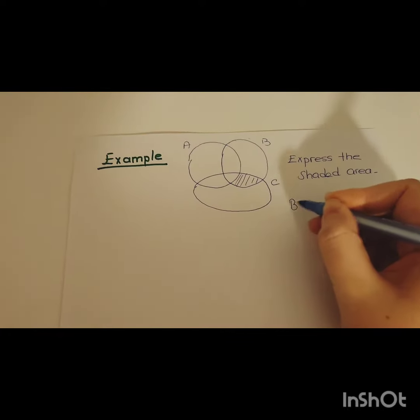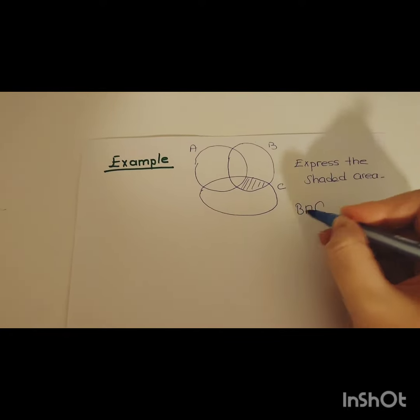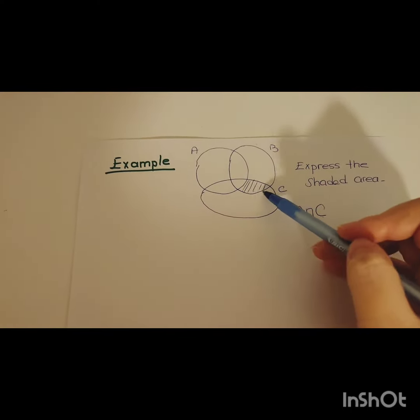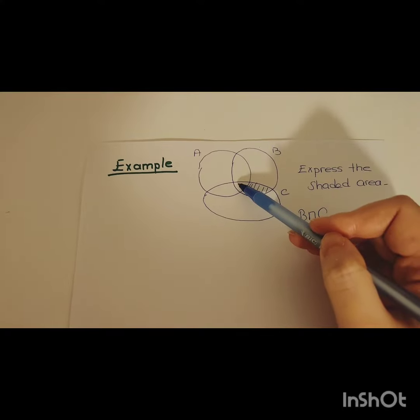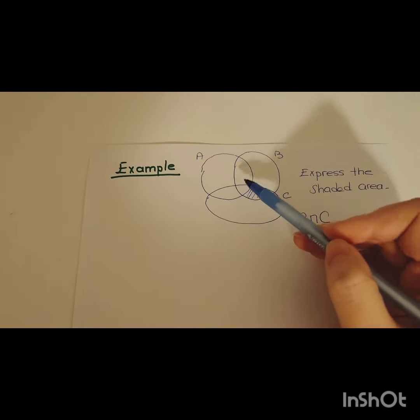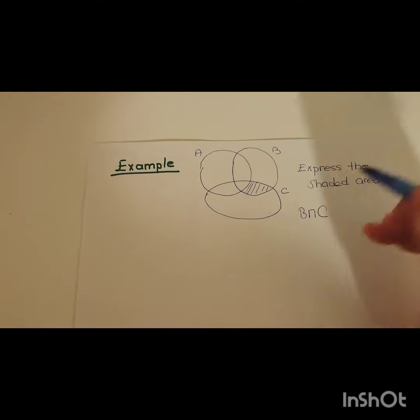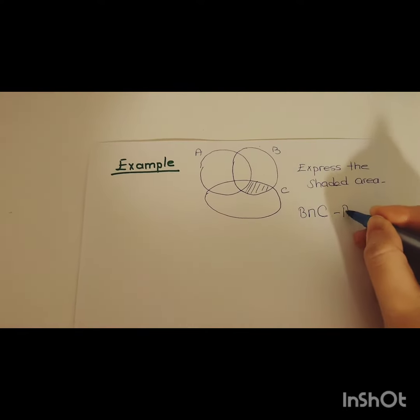So let's write this: B intersection C. But let's be careful. It doesn't cover all of the intersection. It excludes the area that belongs to A. So it excludes A.